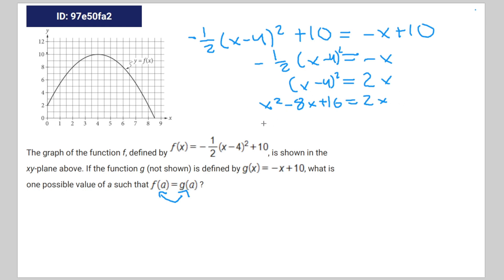Subtract 2x from both sides, you're gonna get x^2 - 10x + 16 = 0.